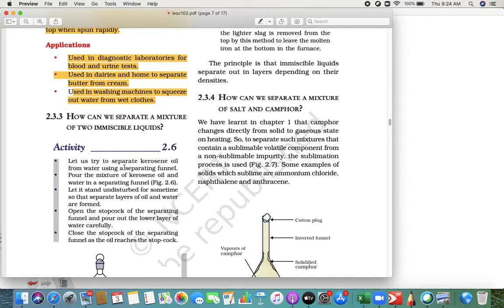Immiscible liquids means those that do not mix with each other. For example, if you have water and oil, they do not mix with each other. Those are called immiscible liquids.